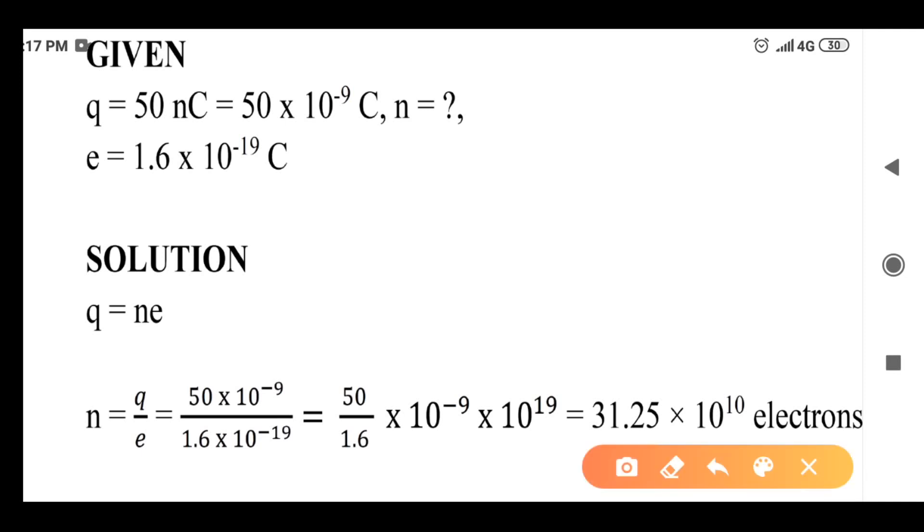First, given data: Q is equal to 50 nanocoulomb. So 50 nanocoulomb is 50 into 10 power minus 9 coulomb.